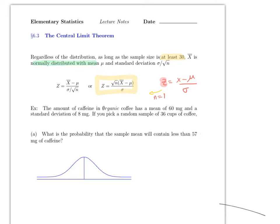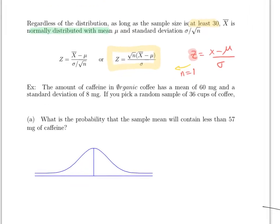The good news is that once you convert to z, this is identical to section 6.2, which means it's identical to section 6.1. Let's do an example.